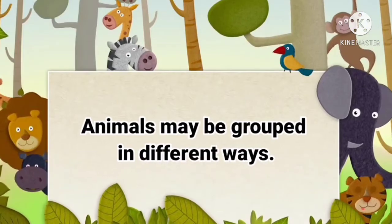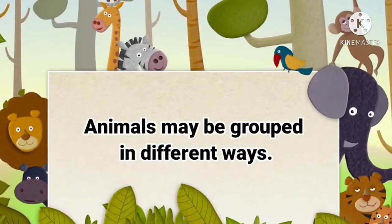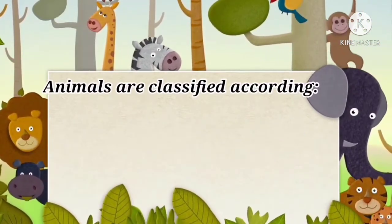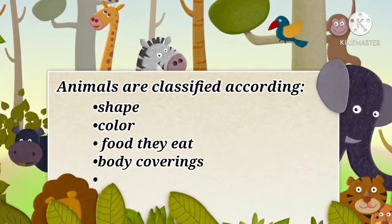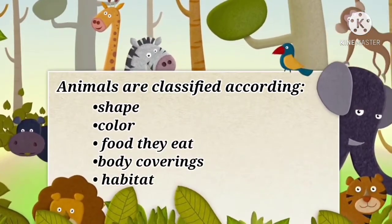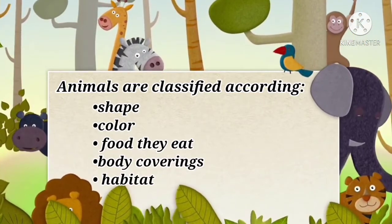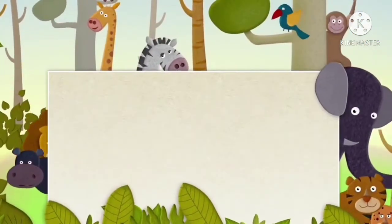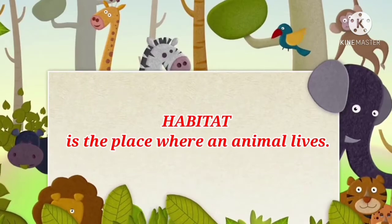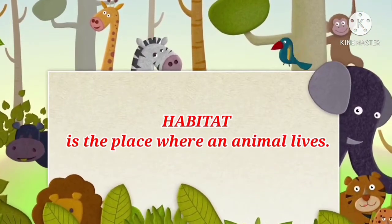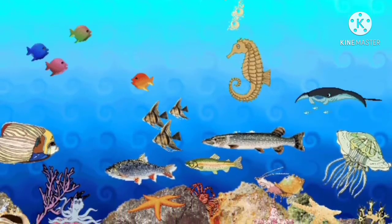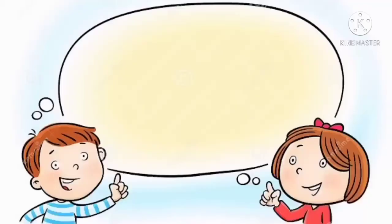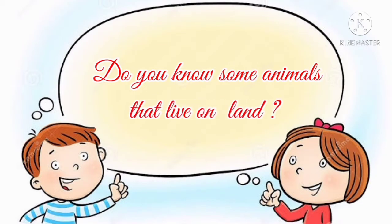Animals may be grouped or classified in different ways. They may be grouped according to their shape, color, types of food they eat, body coverings, and habitats. A habitat is a place where an animal lives. It can be those that live on land and those that live in water. Do you know some animals that live on land?